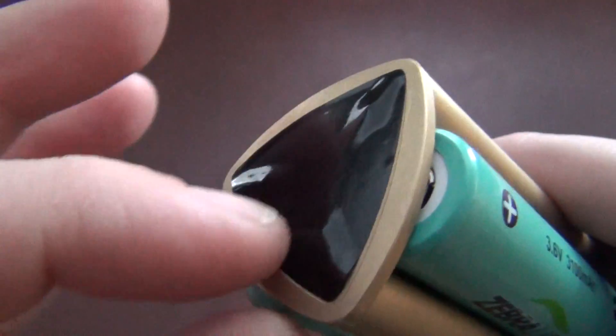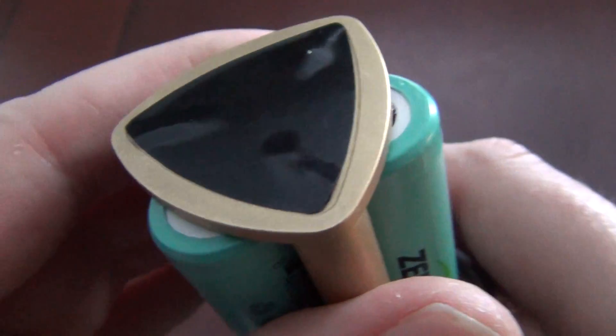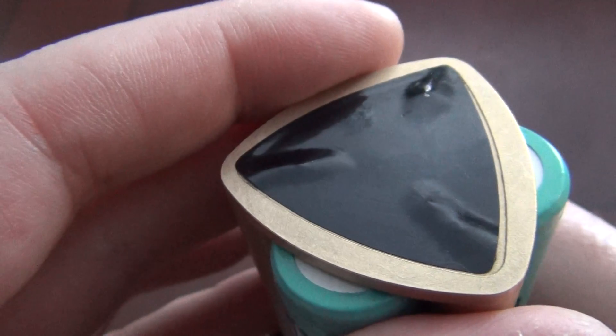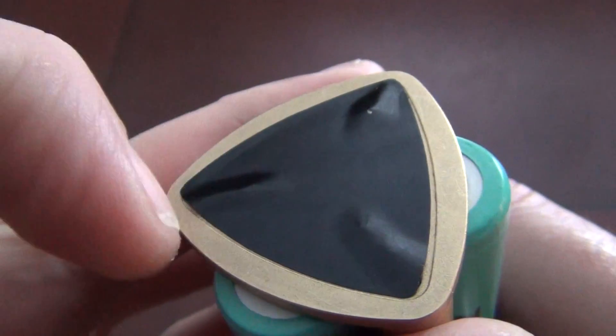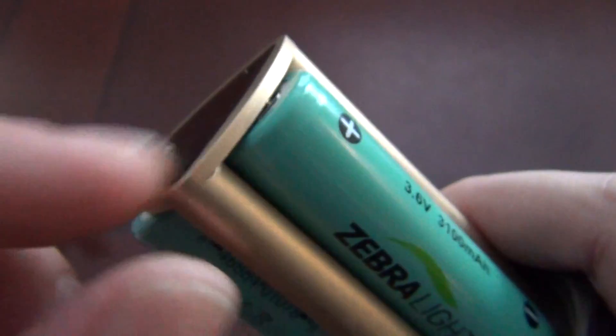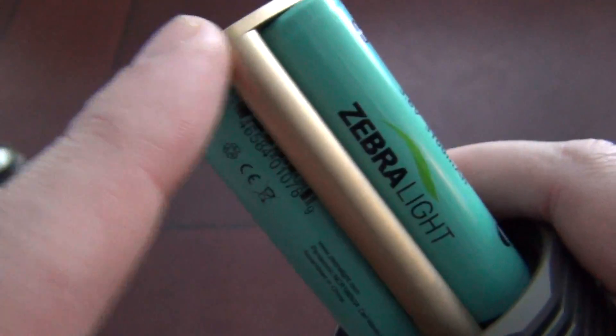One interesting thing I noticed was that in the pictures this didn't necessarily look like a sticker, which is what it is. Some sort of sticker covering up some wires that go down these tubes here.